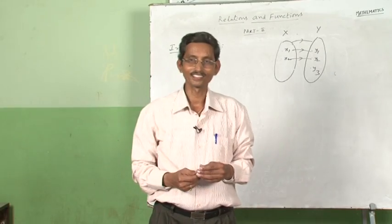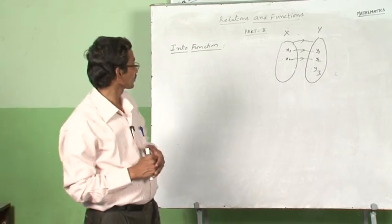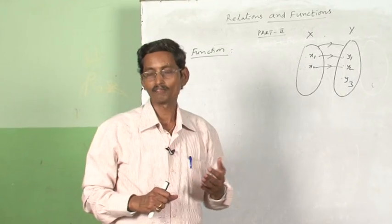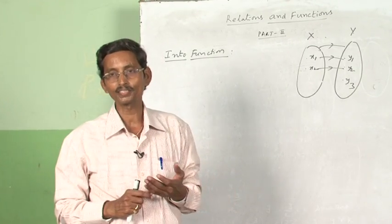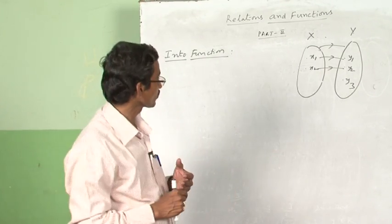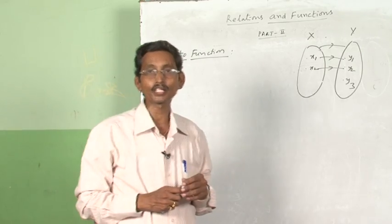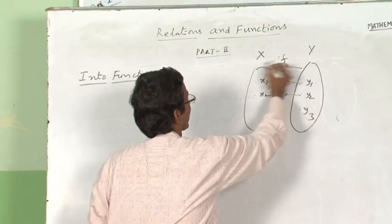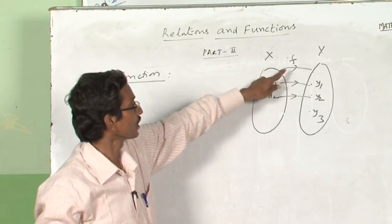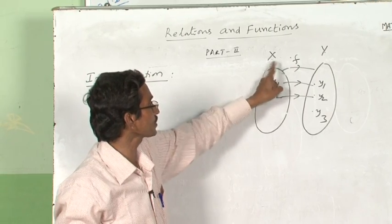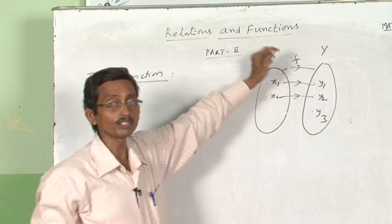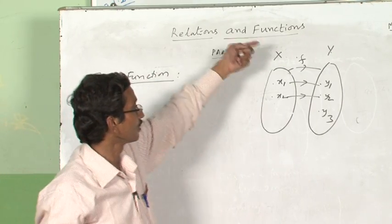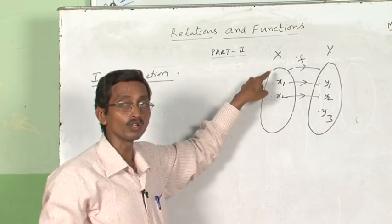My dear students, today we will go to one more function — that is the into function. We discussed one-one function and onto function and solved questions on each. Now we go to the into function. Consider a function f mapping from X to Y where X and Y are two sets. A mapping from X to Y is said to be an into function if there exists an element in Y having no preimage under f.